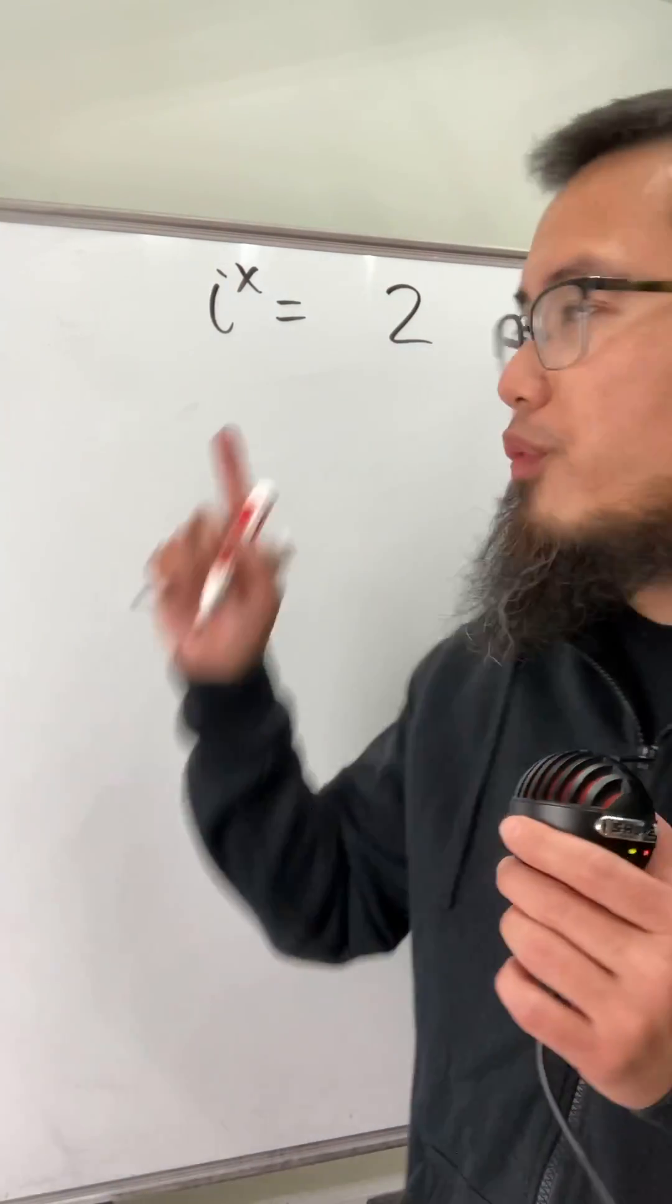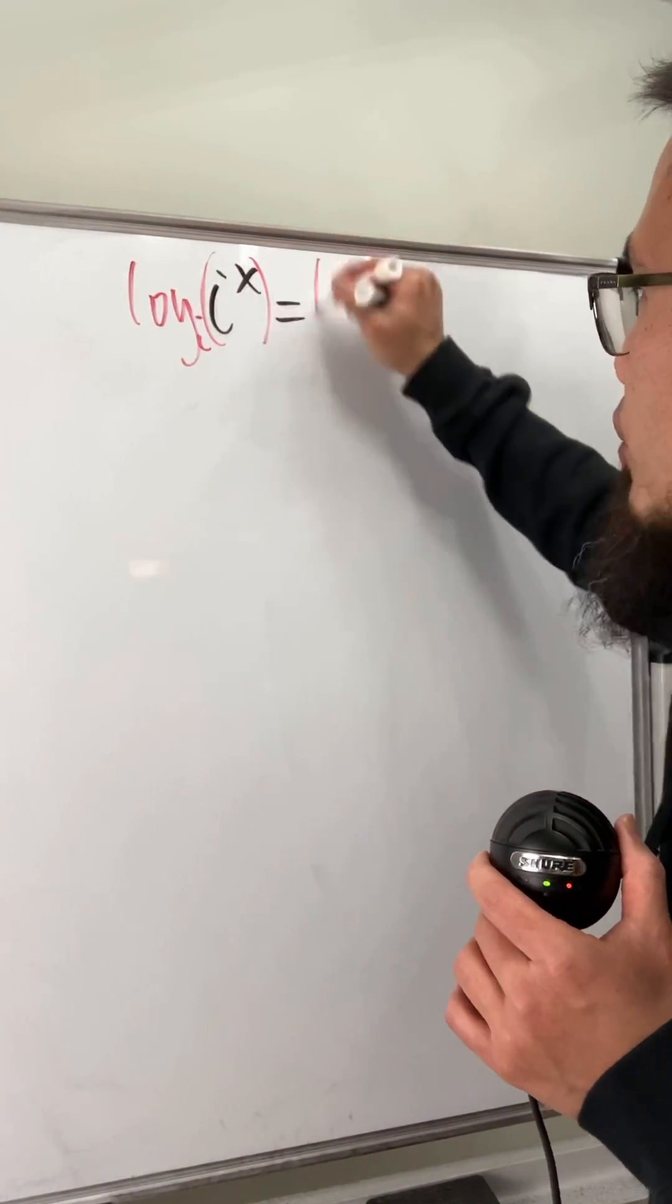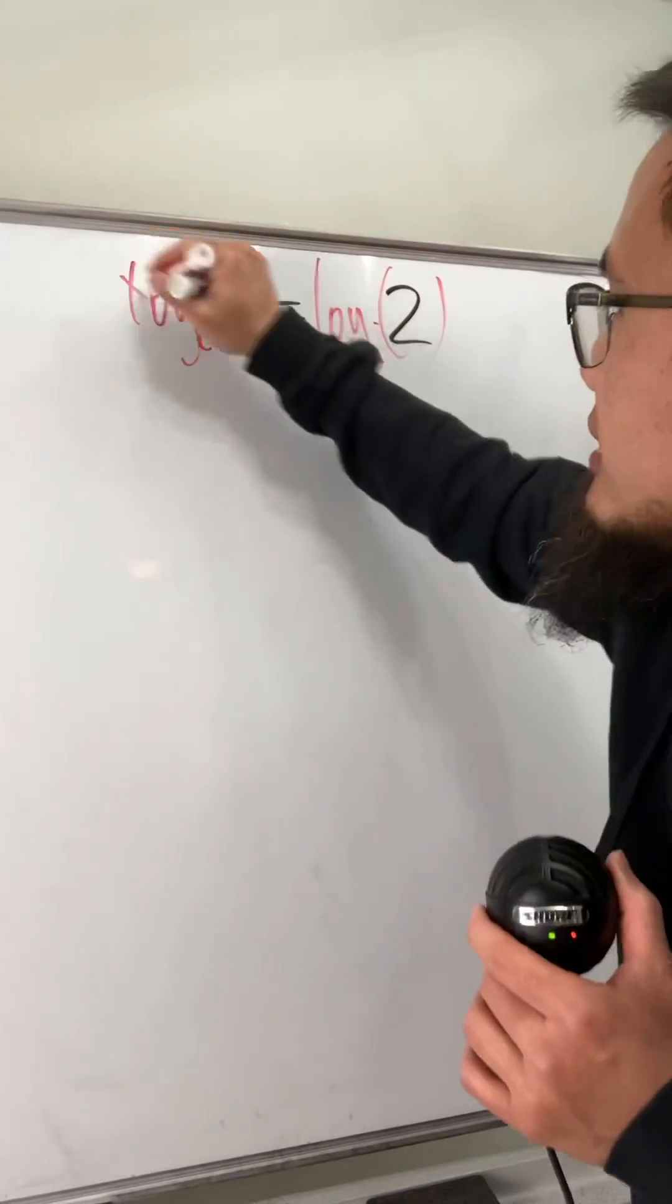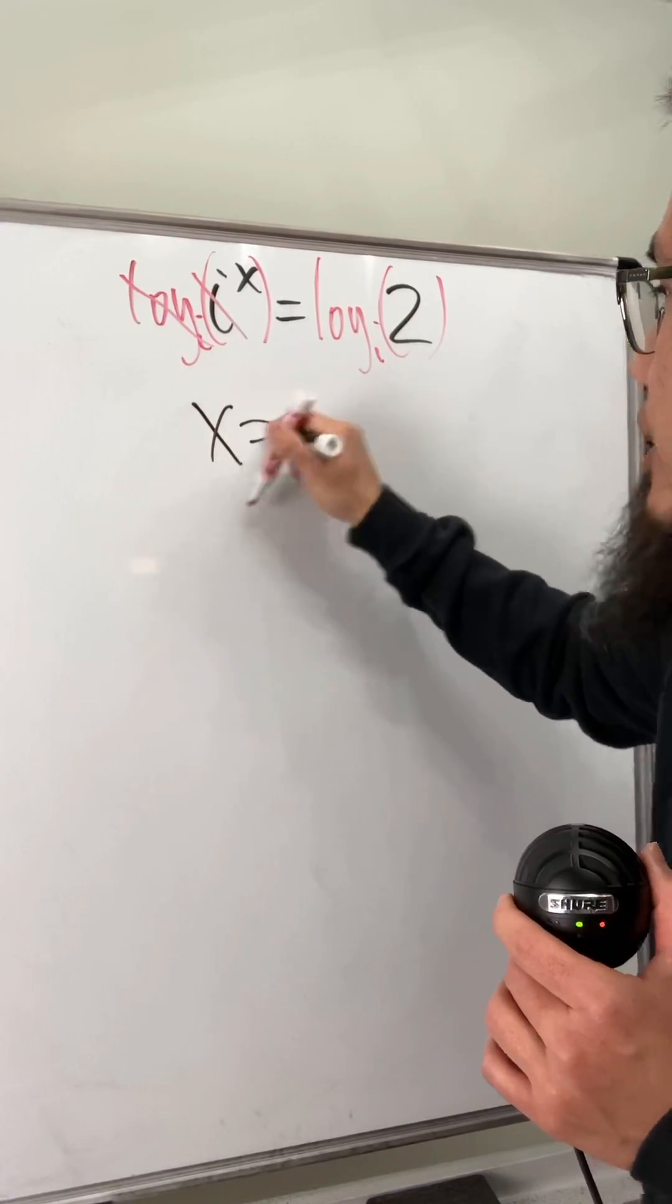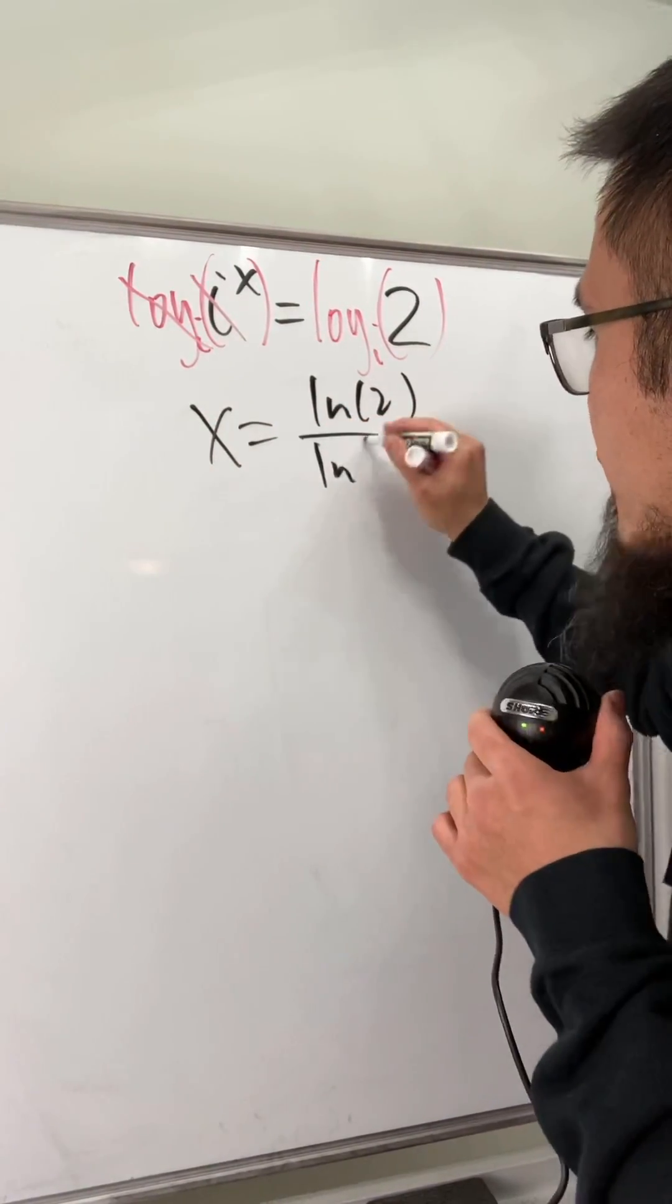So now I'm going to find you guys one solution for this equation. All we have to do is just take log base i on both sides, because this way you can see that this and that will cancel. We just get x by itself and use the change of base law right here. We will get ln 2 over ln i.